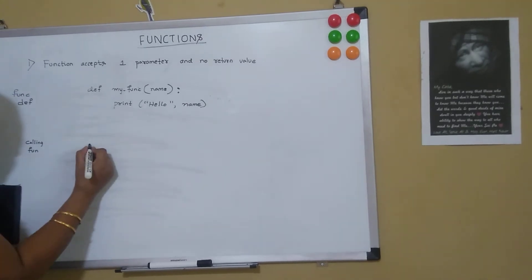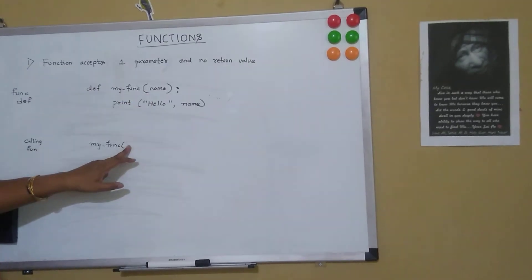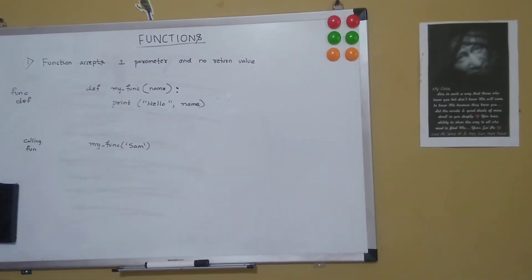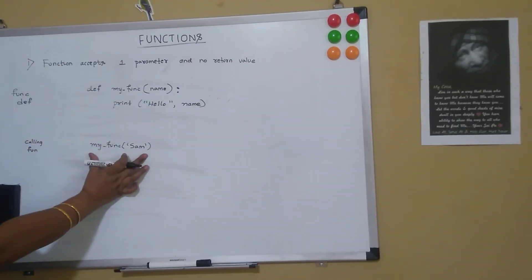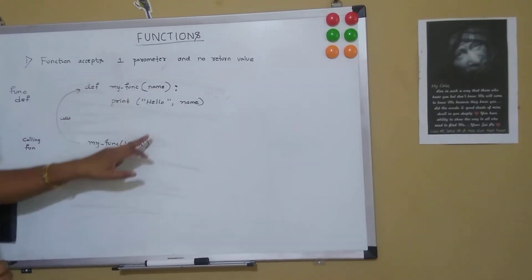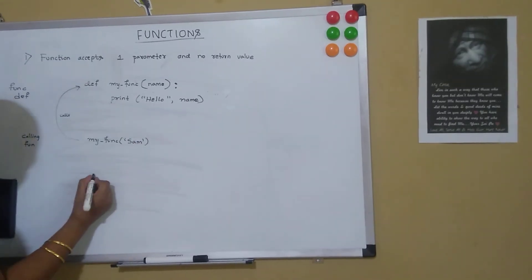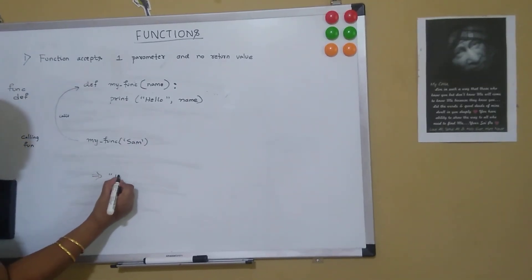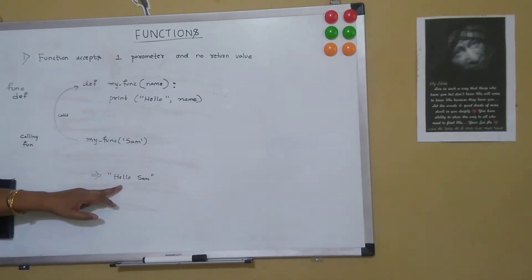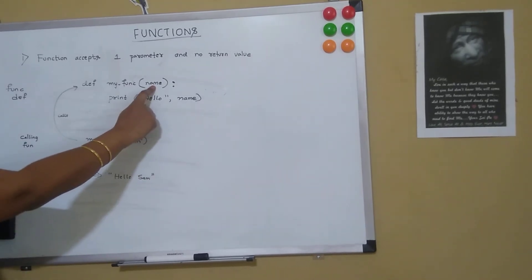This does not get executed as-is; we have to call the function. Here I am calling my_function and I have to pass the same number of parameters — if it is accepting one, I have to pass one. So I am passing 'san' as the parameter. When it encounters this statement, the function gets called, and 'name' will now have the value 'san'. So 'hello san' gets printed on the console. This was a function with a single parameter.